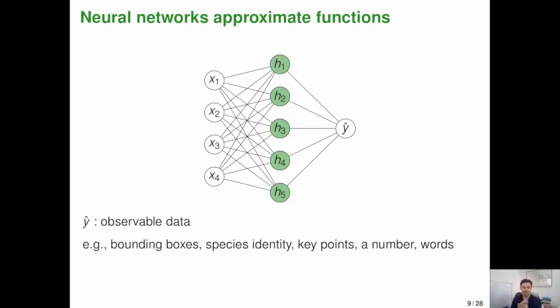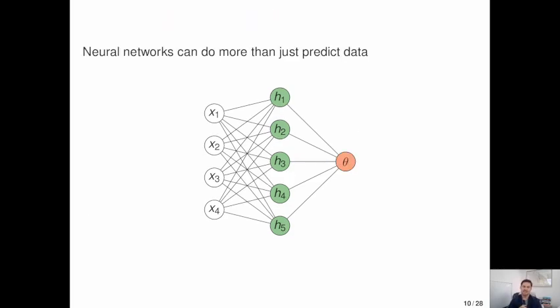But this talk's about neural networks. So just a quick introduction. Neural networks are just function approximators. So you've got some inputs X and you're feeding those inputs to the network. The neural network here is sort of represented by these green nodes in this graph. This would be like a hidden layer. That hidden layer then maps to Y hat, which would be observable data. Some examples here would be bounding boxes for object detection, species identity, key points for like facial pose detection, a number or maybe words if you're doing some language model.